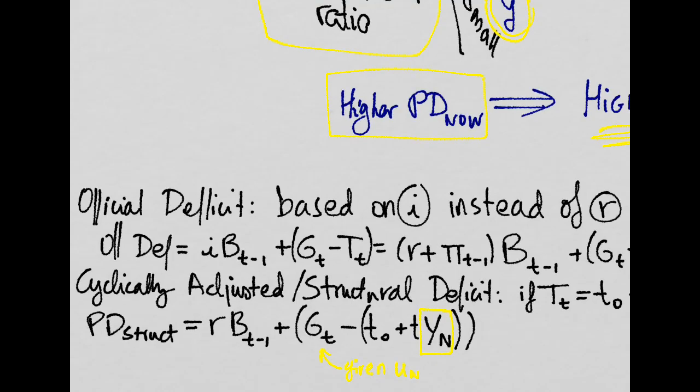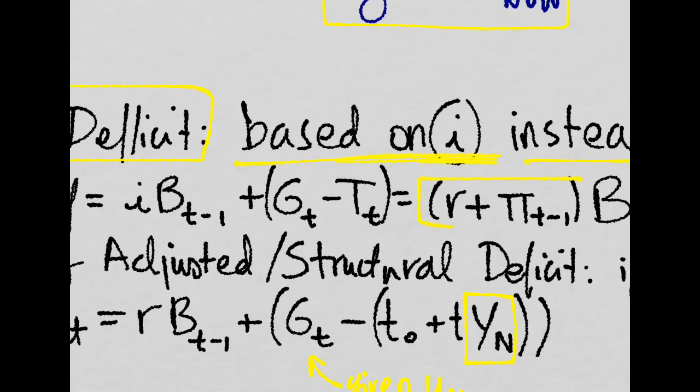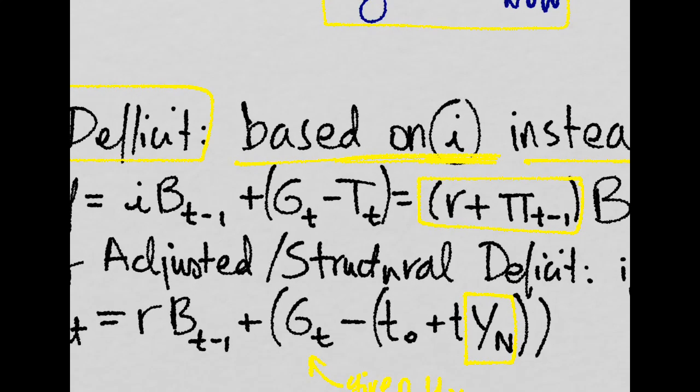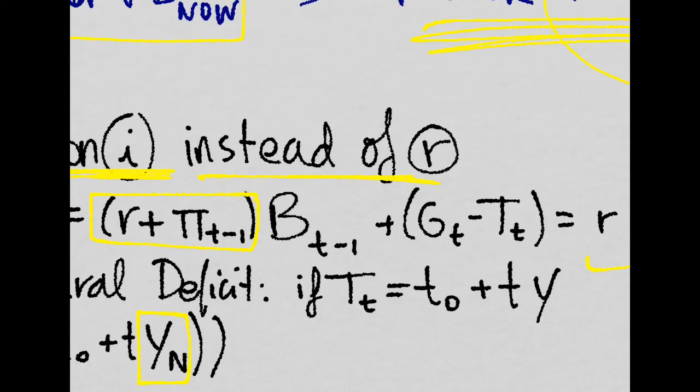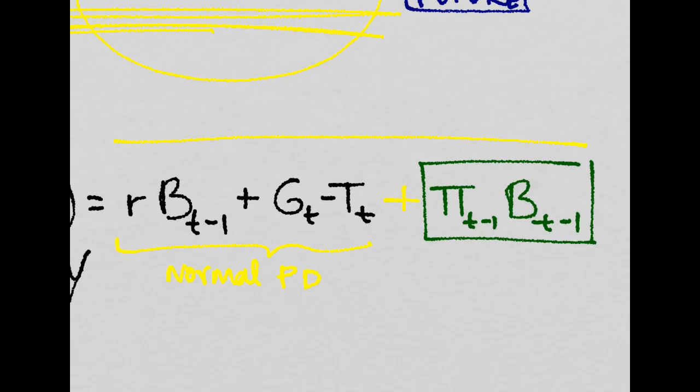Now, we can define the official deficit as based on the nominal interest rate instead of the real interest rate. That is, it's just equal to R plus the inflation rate. So we haven't taken care of inflation. So we multiply this and this. We get all this. That's the official deficit, which is only the normal deficit we have studied plus this factor here.